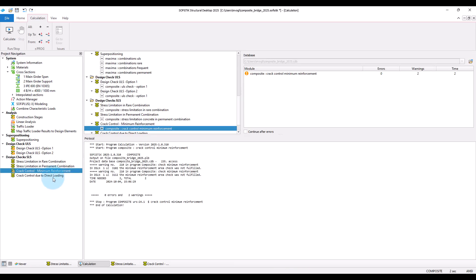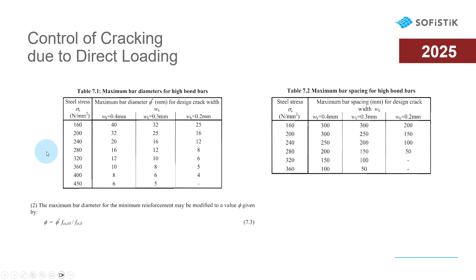Next, crack control due to direct loading. For a given reinforcement stress, the crack width limit can be either enforced by limiting the diameter of the reinforcement bars or by limiting the bar spacing.